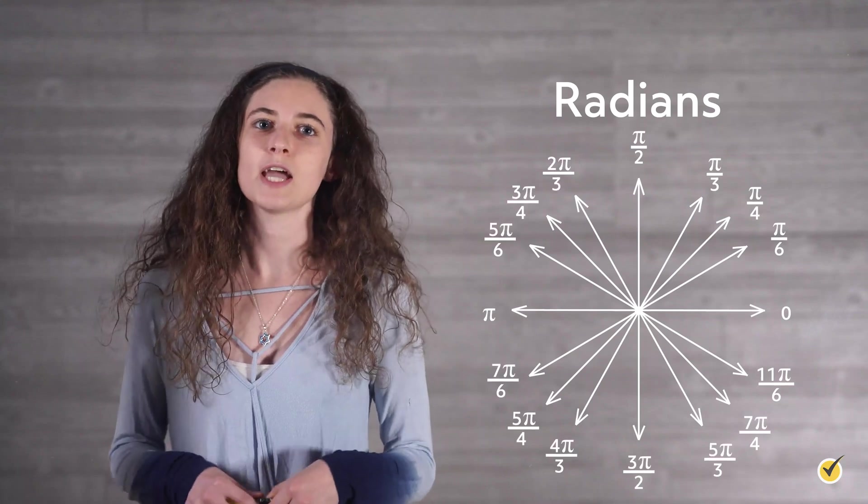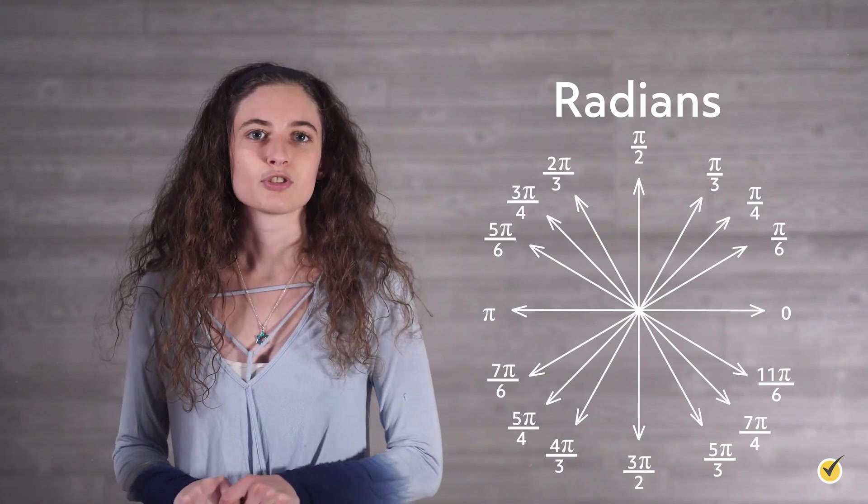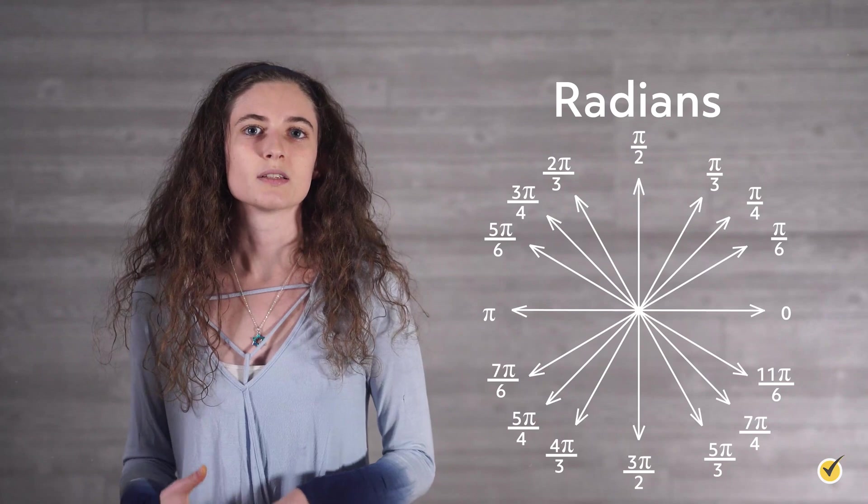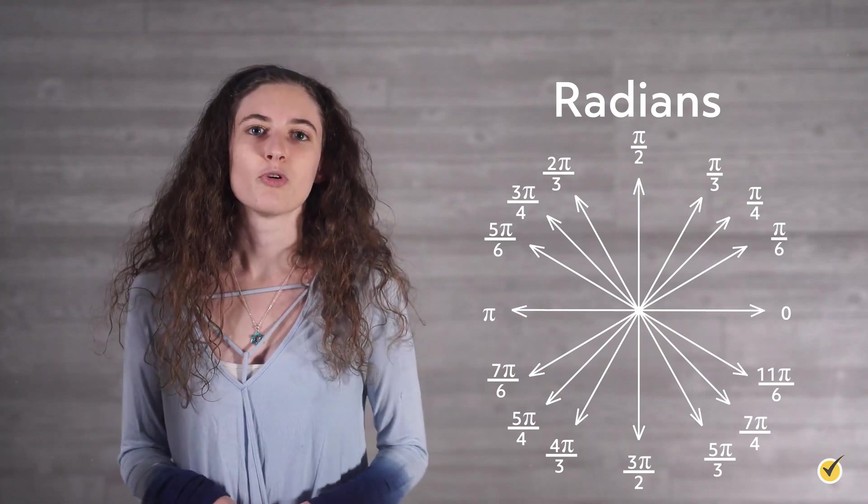But there's actually another way you can measure an angle, and that's by measuring in radians. Measuring in radians relates the angle to pi, so pi will be in almost every angle measure when measuring in radians. Since pi is the ratio of a circle's circumference to its diameter, it makes sense that we use radians most often when working with circles. As most of you have heard before, a circle has 360 degrees.